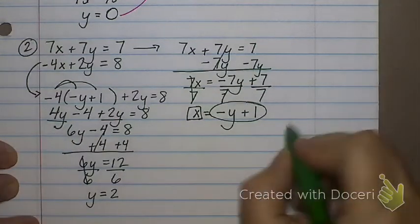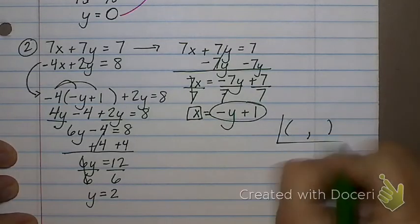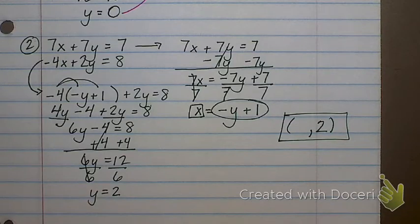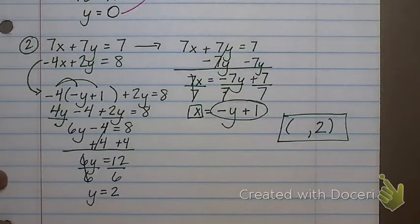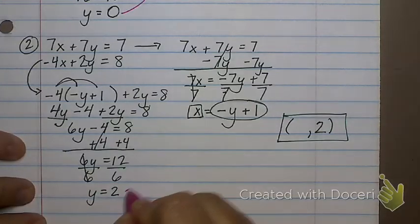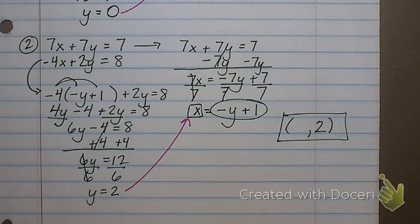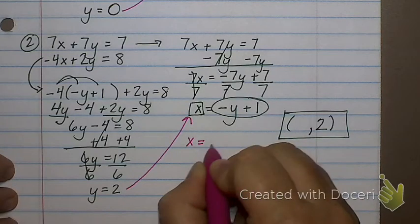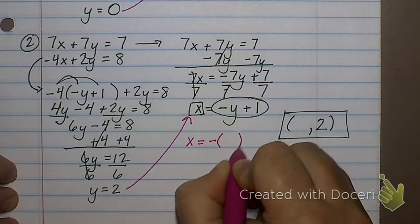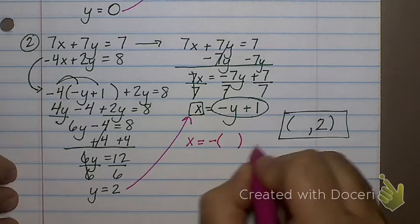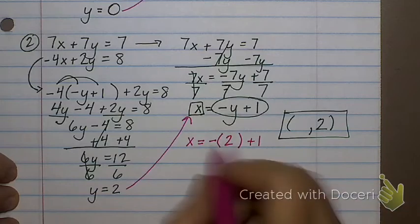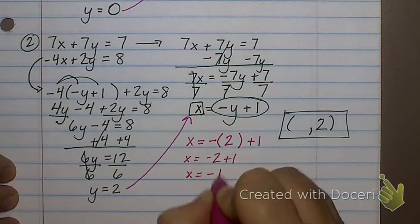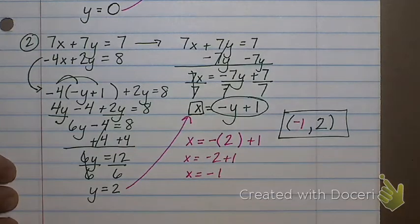So again, my answer is an ordered pair. And I just found the y value, so that's what would come last in that ordered pair. How do I find x? Plug it in. Plug it in where? Back where I had x by itself. So x equals negative parentheses 2. That means negative 2 plus 1, which is what? Negative 1. So my answer there is negative 1, comma 2.